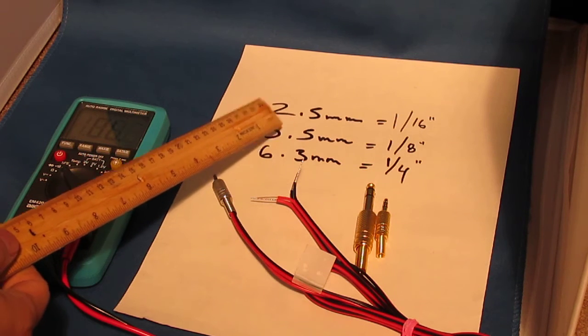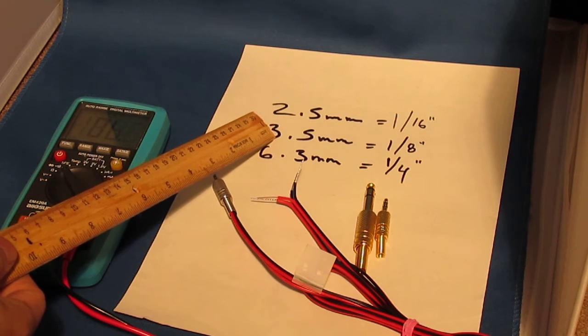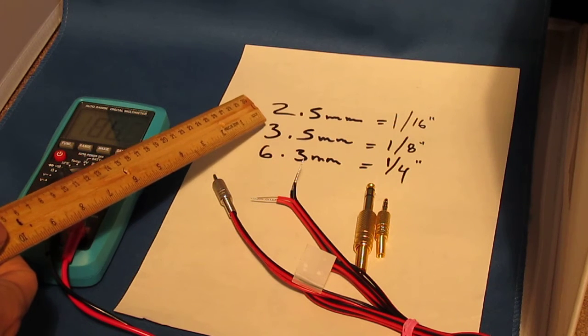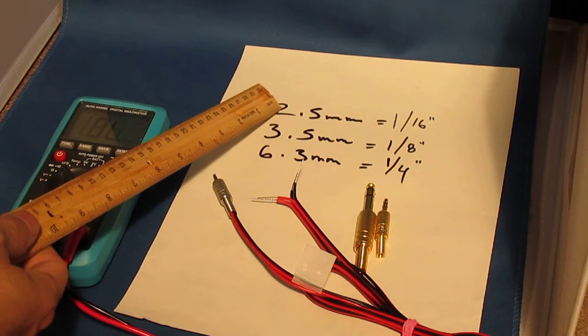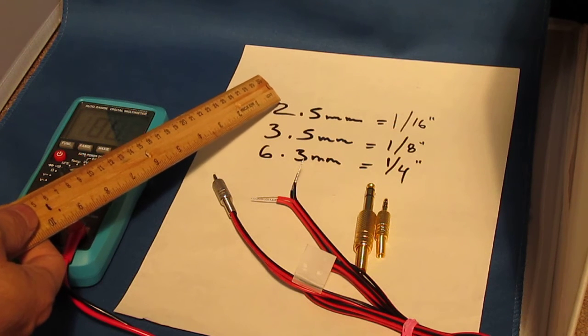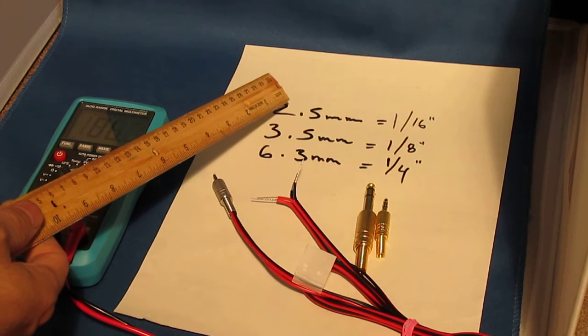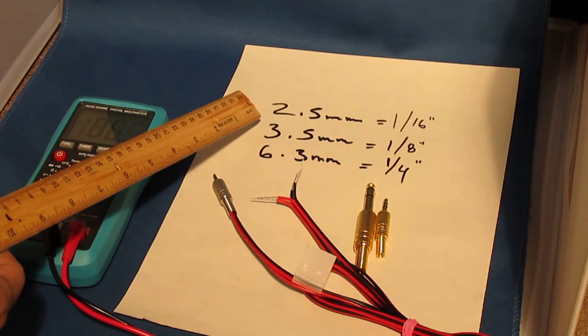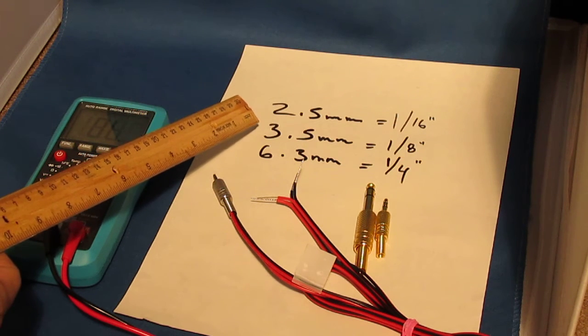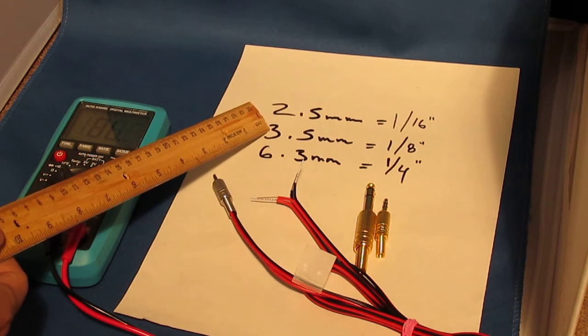The next one is the 3.5. This is a pretty standard for like phones and iPhones and things like that. The newer one, you might have to use the 2.5, which they're trying to shrink it even smaller so that way the phone can be thin.